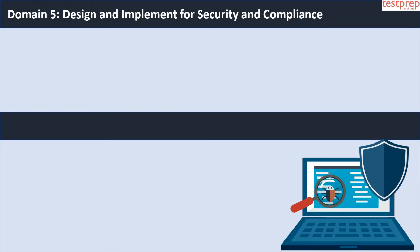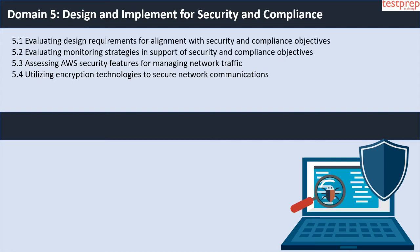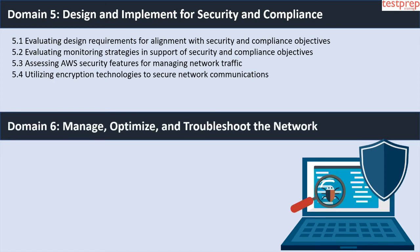Sixth, reconciling AWS service requirements with network requirements. Domain 5: Design and Implement for Security and Compliance — it contains four subtopics: first, evaluating design requirements for alignment with security and compliance objectives; second, evaluating monitoring strategies in support of security and compliance objectives; third, assessing AWS security features for managing network traffic; fourth, utilizing encryption technologies to secure network communications. Domain 6: Manage, Optimize, and Troubleshoot the Network — it contains one subtopic: given a scenario, troubleshooting and resolving a network issue.